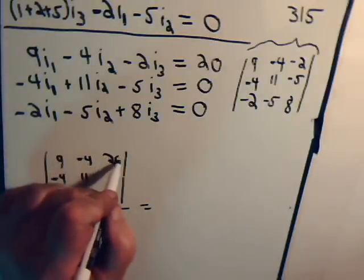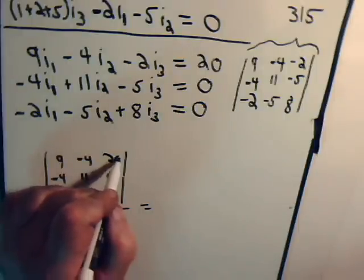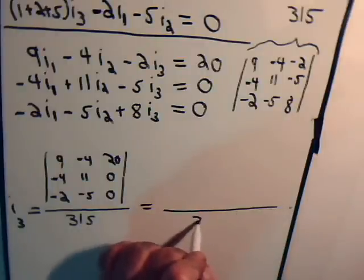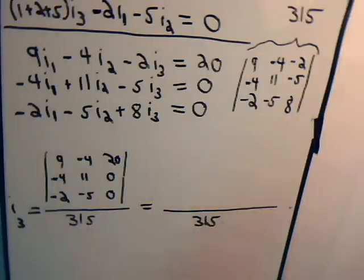So we have minus 4 plus 11 minus 5. And then 20, 0, 0. Divided by the same denominator, 315.